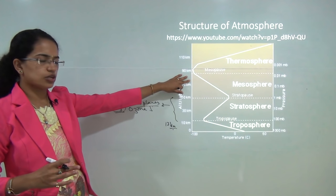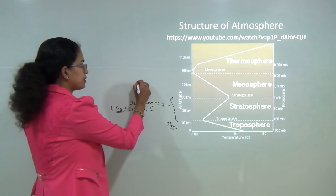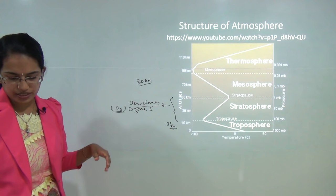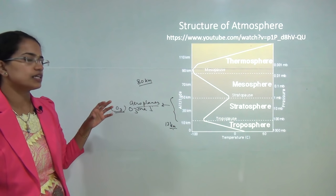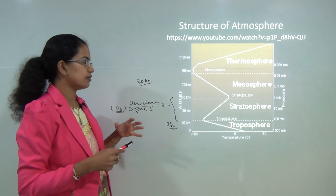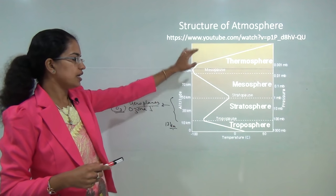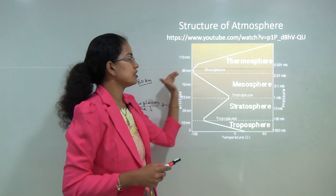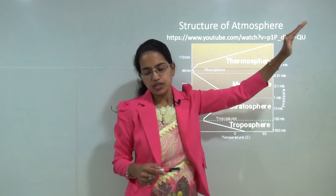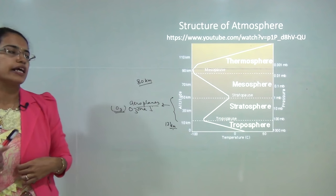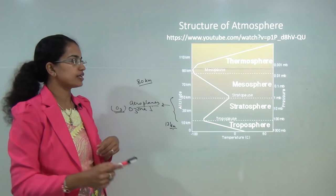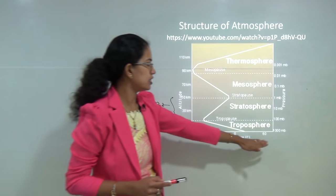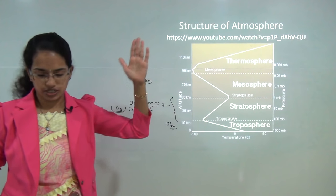Next to the stratosphere is the mesosphere, which extends up to 80 kilometers. It is in the mesosphere that most meteoroids burn up. Next to the mesosphere is the thermosphere, where there is a rapid increase in temperature. The temperature varies from negative values to nearly 60 degrees Celsius — that is a huge range of temperature increase.